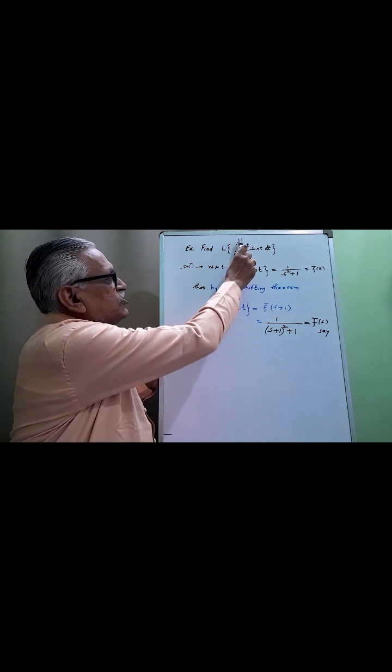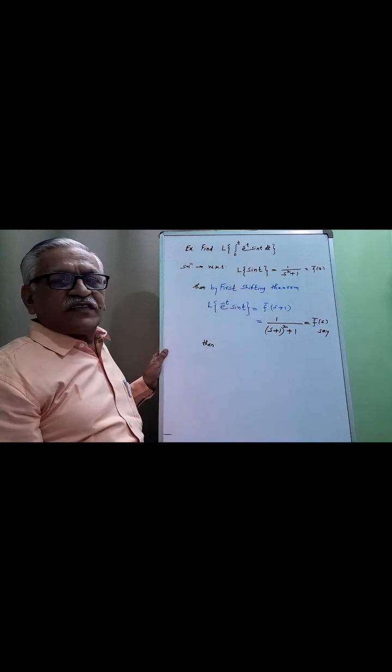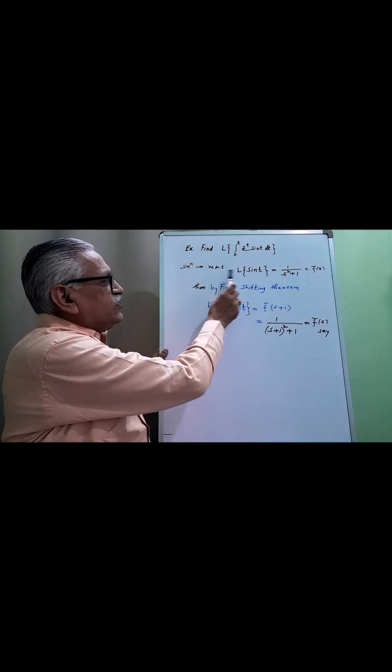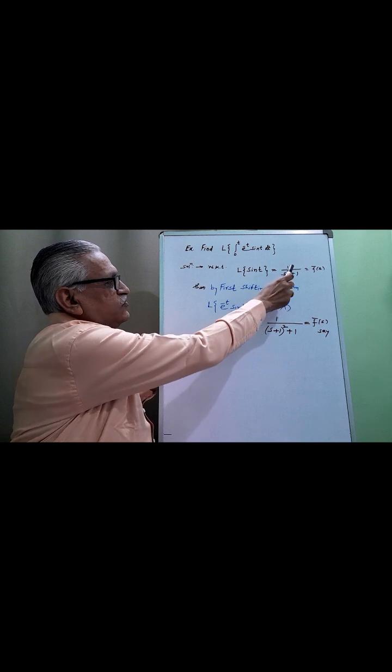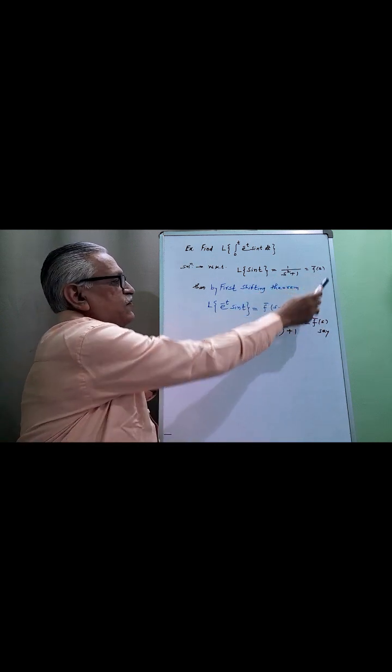To find the Laplace of the integral from 0 to t of e raised to minus t sine t, we know that the Laplace of sine t is 1 upon s square plus 1, which we call f bar of s.